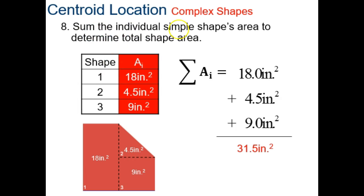Next, what we've got to do is sum the individual shape areas to determine the total shape area. So, areas 1, 2, and 3, 18, plus 4.5, plus 9 square inches. This is this number. Now, the sum of the areas will be the same for the X and the Y, because it doesn't matter if we're measuring X's or Y's, the area is still the same. So, the denominator here will be the same for both X and Y centroid locations.